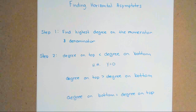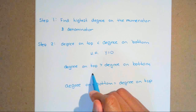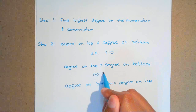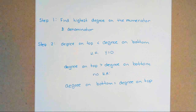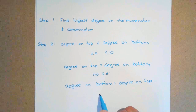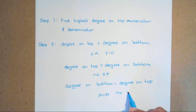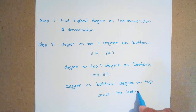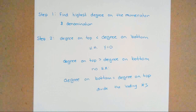When your degree on top is greater than your degree on the bottom, there are going to be no HAs. And lastly, when your degree on the bottom is equal to your degree on the top — meaning they both have the same highest exponent — you're going to divide the leading coefficients, meaning the leading numbers. Those are the three rules to help you find your HAs.